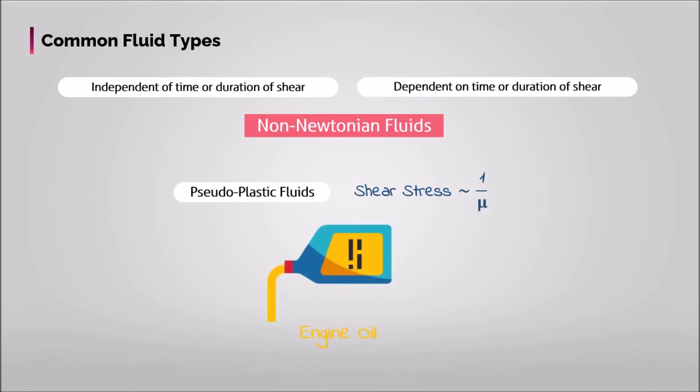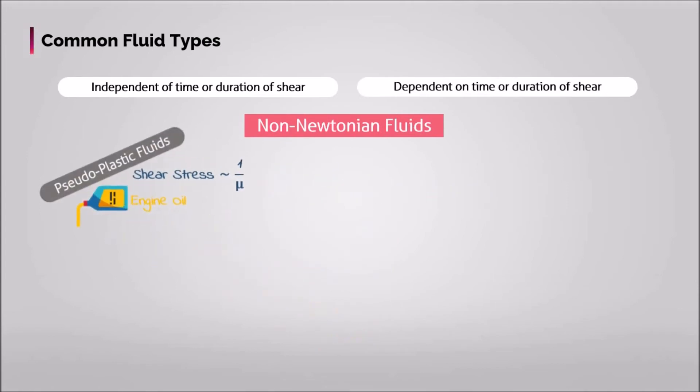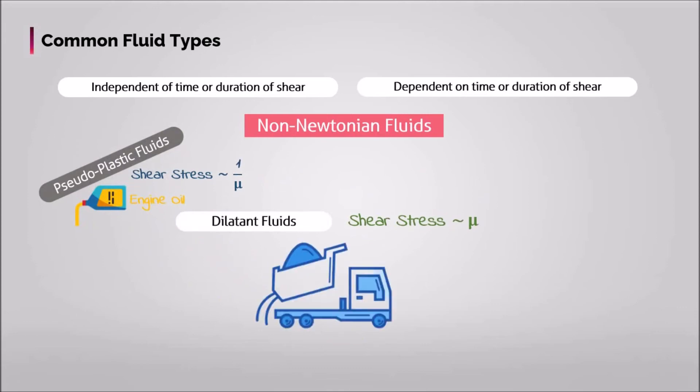Dilatant fluids, or shear thickening fluids — for these fluids, when the shear force on the fluid increases, the apparent viscosity increases. Quicksand is one example.